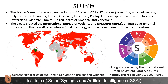Let us briefly touch on the historical context of the SI units. The Meter Convention was signed in Paris on 20 May 1875 by 17 nations. The treaty created the International Bureau of Weights and Measures, an intergovernmental organization that coordinates international metrology and the development of the metric system. Currently, most major countries in the world are signatories, and here is the logo of the International Bureau of Weights and Measures, showing all the base units and defining constants.